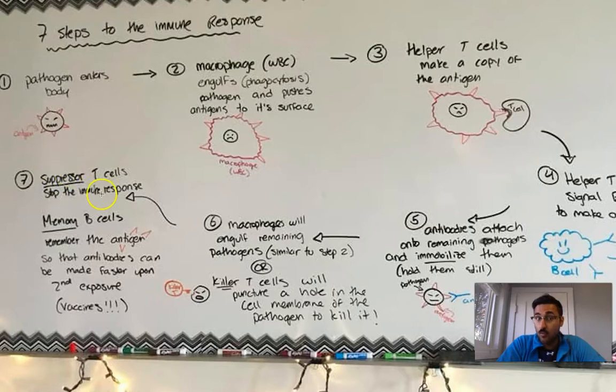If the suppressor T cells don't work, then you don't stop the immune response, then you will have what's called an autoimmune disorder where your body starts attacking its own cells because it's got nothing better to do, and that's not good.